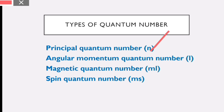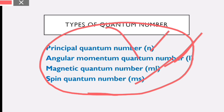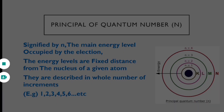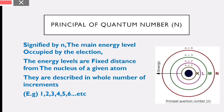The magnetic quantum number is the ML, and the spin quantum number is the MS. The principal quantum number represents the energy state — the main energy level that the electron occupies. The shells are K shell, L shell, M shell, and N shell. The energy level is at a fixed distance between the nucleus of the given atom, in whole number increments.